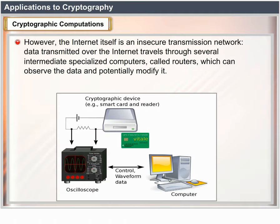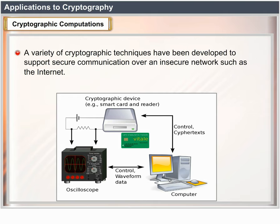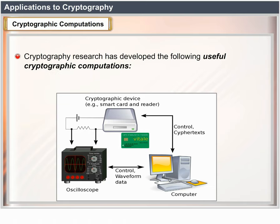However, the internet itself is an insecure transmission network. Data transmitted over the internet travels through several intermediate specialized computers called routers, which can observe the data and potentially modify it. A variety of cryptographic techniques have been developed to support secure communication over an insecure network such as the internet.